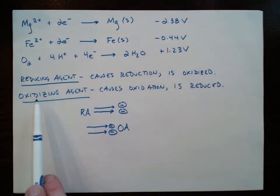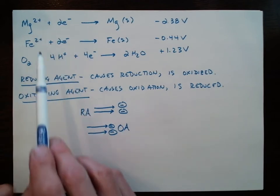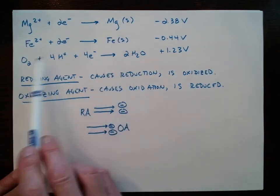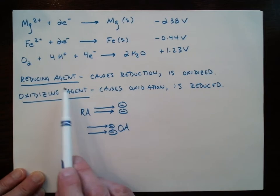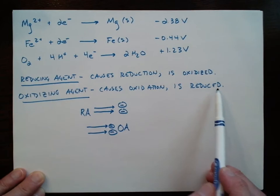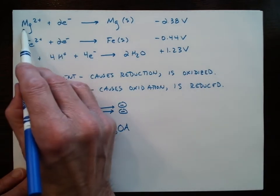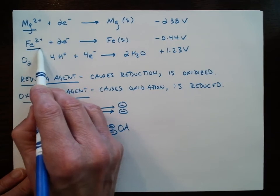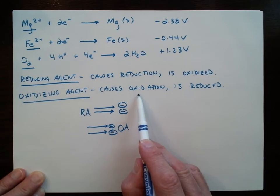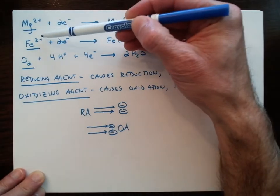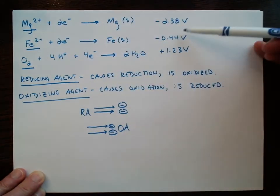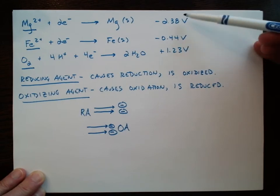I want to relate these two terms to the list of standard reduction potentials. All of the half reactions are listed as reductions. So things on the reactant side — like magnesium two plus, iron two plus, and oxygen — they're all being reduced, so they can cause the oxidation of something else. So I can read all of these as written as oxidizing agents, and I can look at the cell potential to get an idea of how good of an oxidizing agent each of these things is.